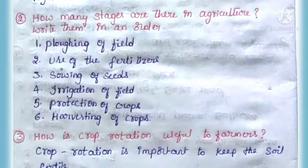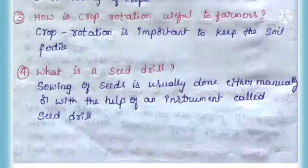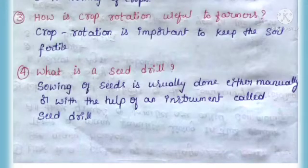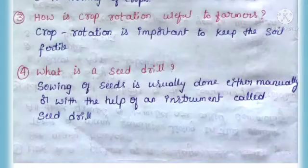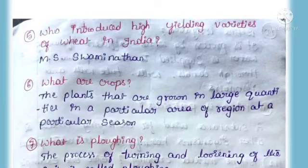Third question: How is crop rotation useful to farmers? Answer: Crop rotation is important to keep the soil fertile. Fourth question: What is the seed drill? Answer: Sowing of seeds is usually done either manually or with the help of an instrument called a seed drill.